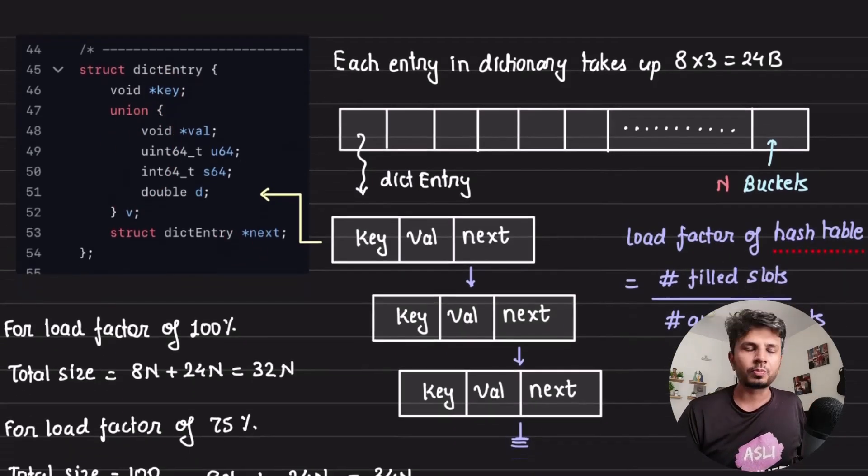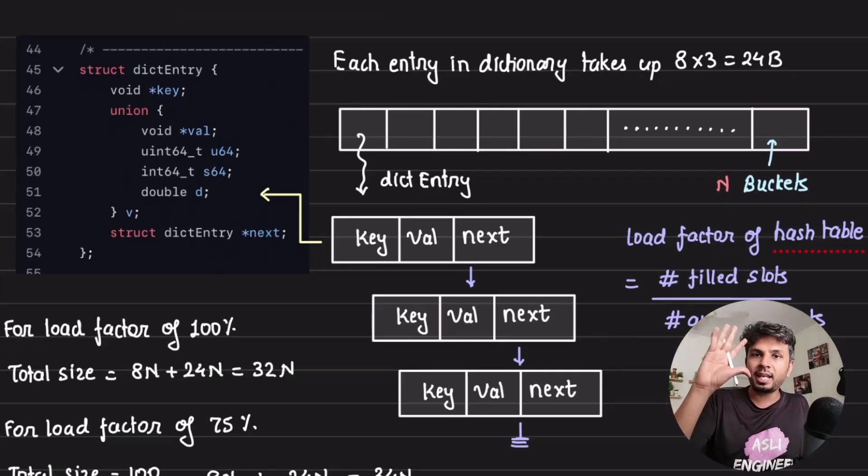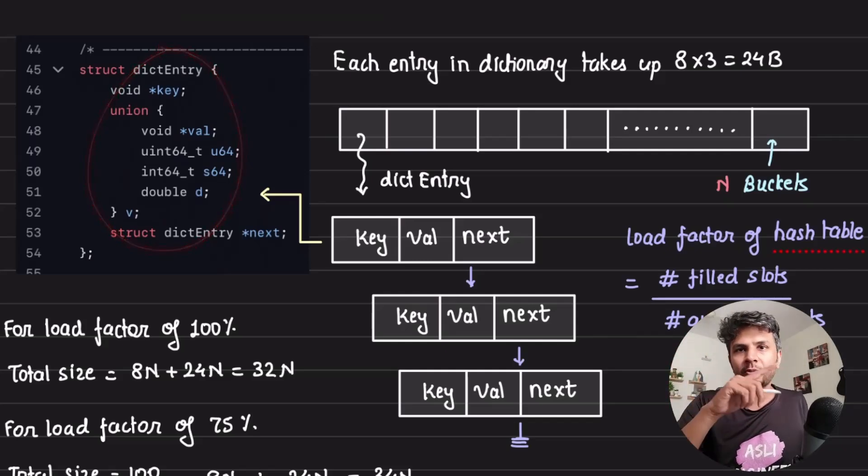If I assume I am holding n elements in my dictionary, my bare minimum size that I would require would be 24n. 24 for each entry and there will be total n entries in it.